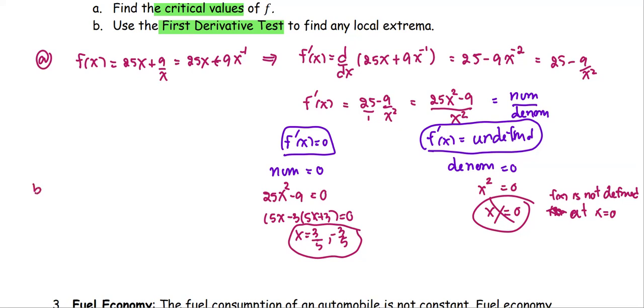In part b, we are going to use the first derivative test to find the local max and local min on the real number line, which is the line to represent the sign of the derivative. For the derivative, in the most factorable form, we have 5x minus 3 times 5x plus 3, all divided by x squared.